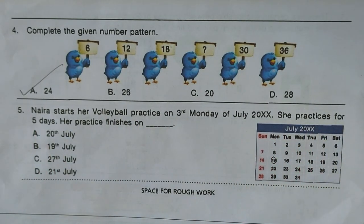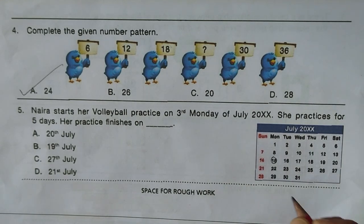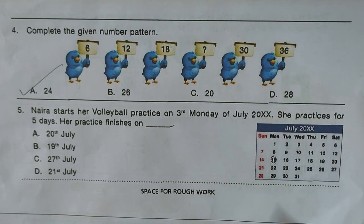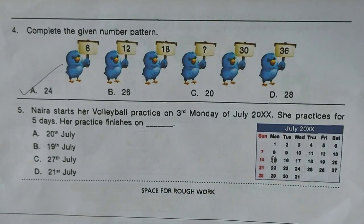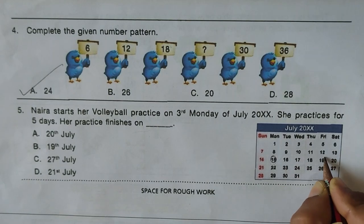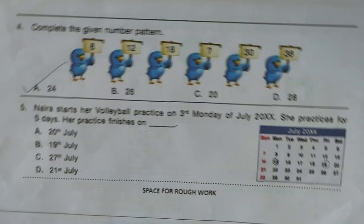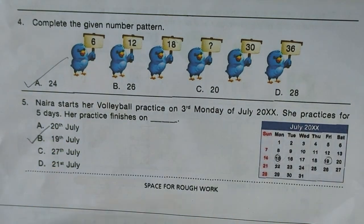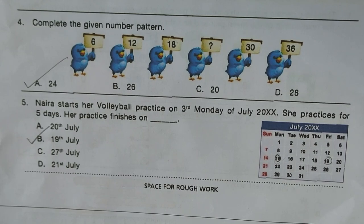Next question: Naira starts volleyball practice on the third Monday of July and practices for five consecutive days. The third Monday is the 15th of July. Continuing five days: one, two, three, four, five — her practice finishes on the 19th of July. Option B is the right answer.